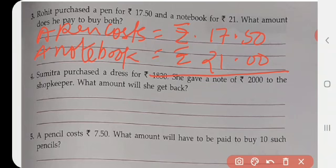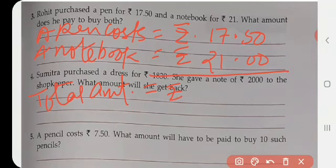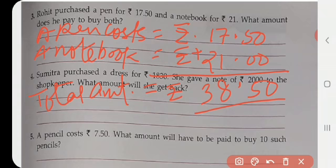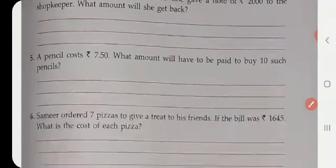Now what is the total amount? Total amount is equal to how much? You add these numbers and you get the answer. So it is ₹38.50 is the total cost of both the pen and the notebook.